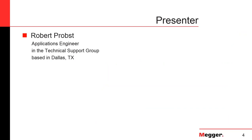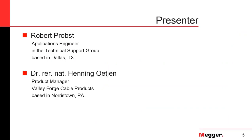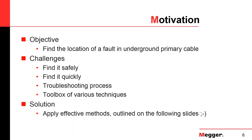Our presenter today is Robert Probst, Application Engineer for Cable Products. Robert is based out of our Dallas office in Texas. Today we are also joined by Henning Oatgen, our Product Manager out of Valley Forge for Cable Products. My name is Robert, and I am one of the Applications Engineers based in Dallas for Cable Products. I joined Megger approximately a year ago, so I have limited field experience. This is why I got support by Henning — he is an authority figure in cable fault location. Whenever my limited knowledge is not enough to answer your questions, I will direct it to Henning.